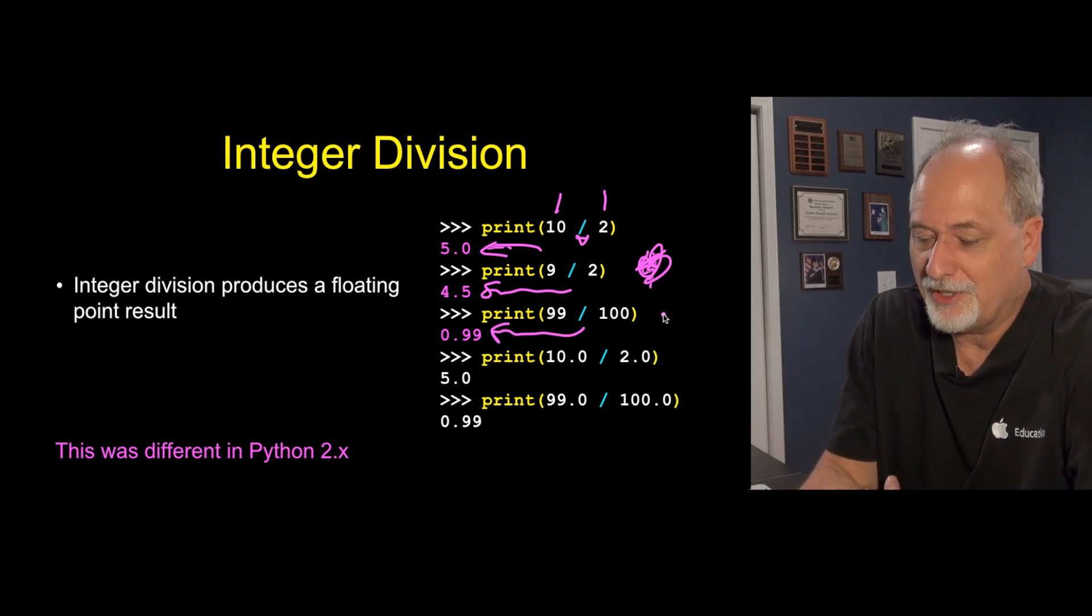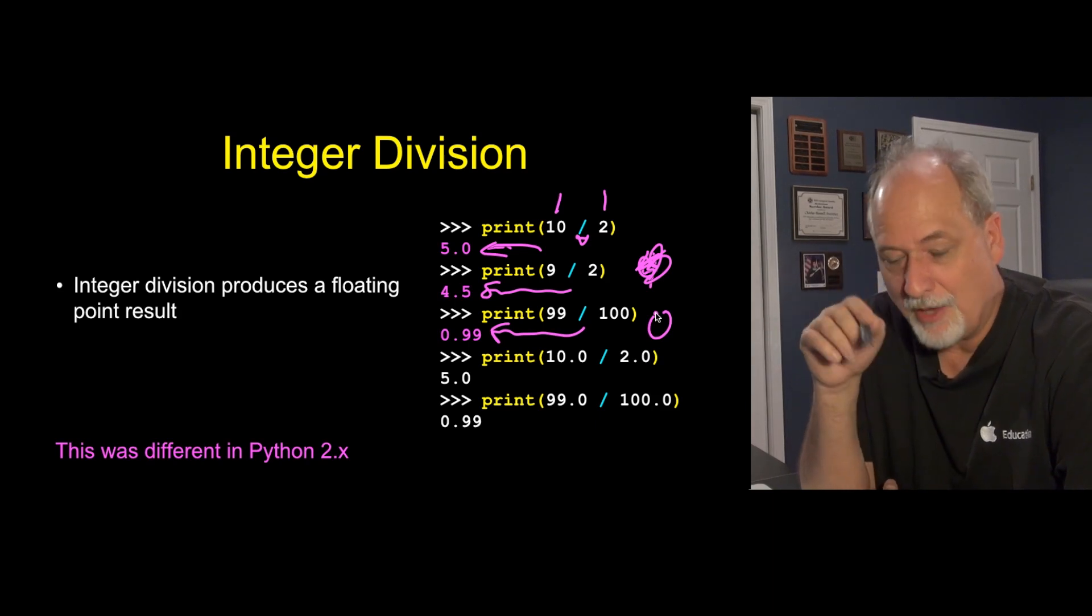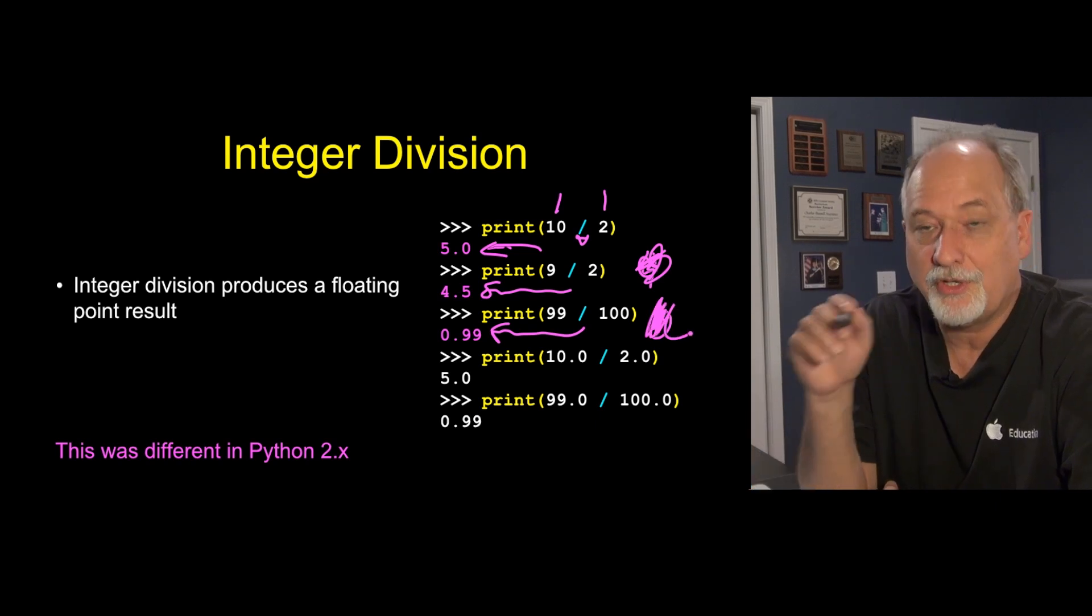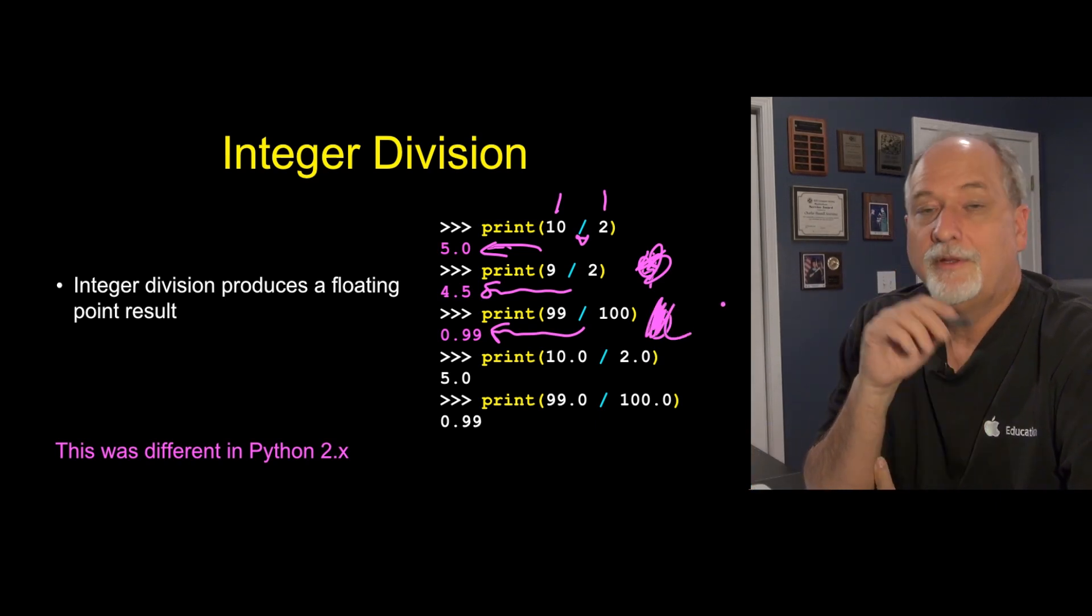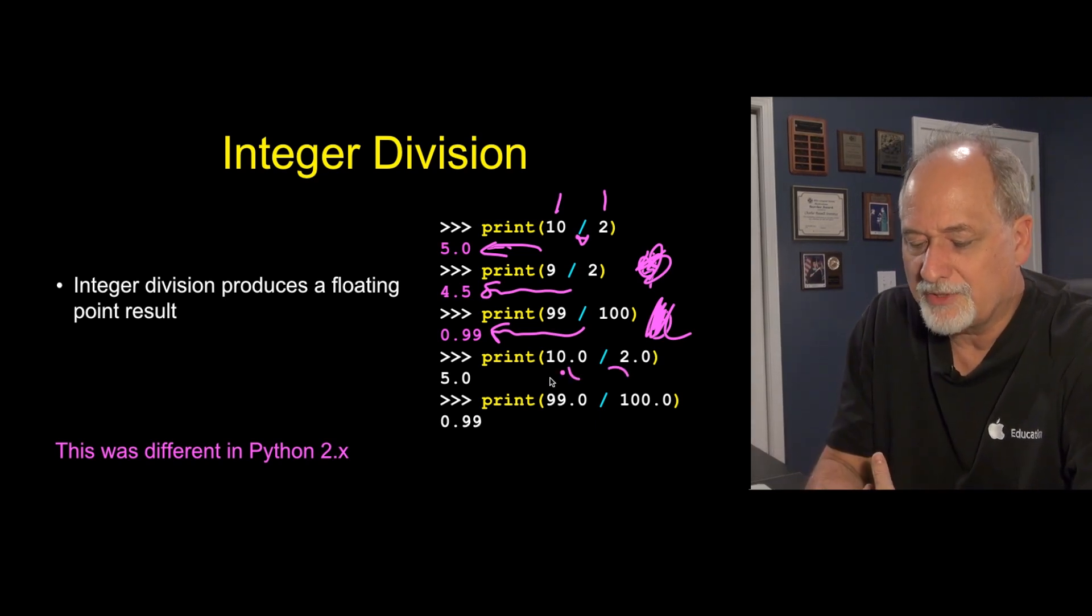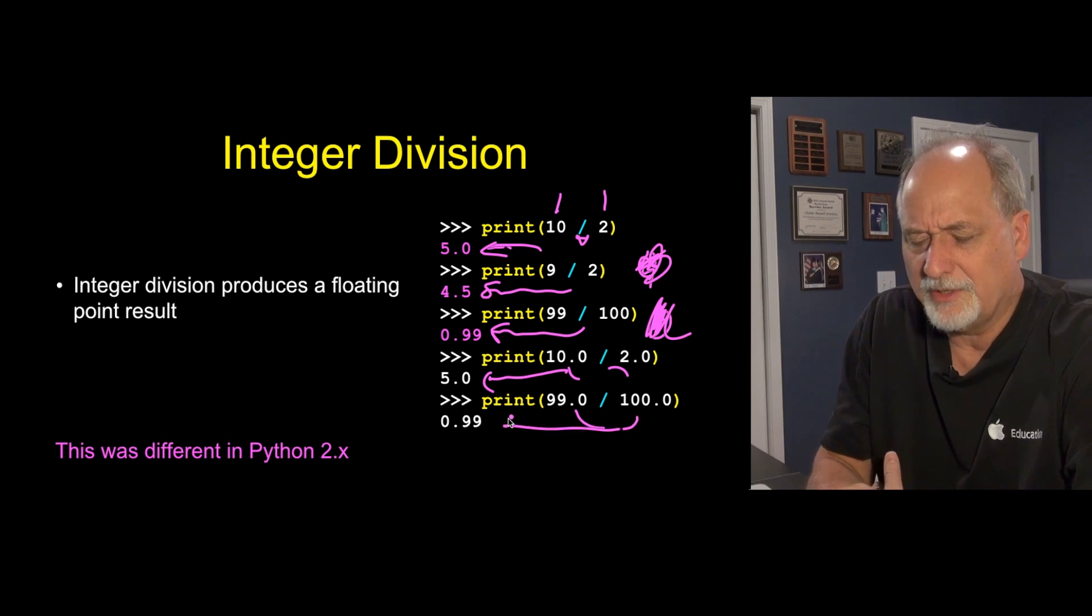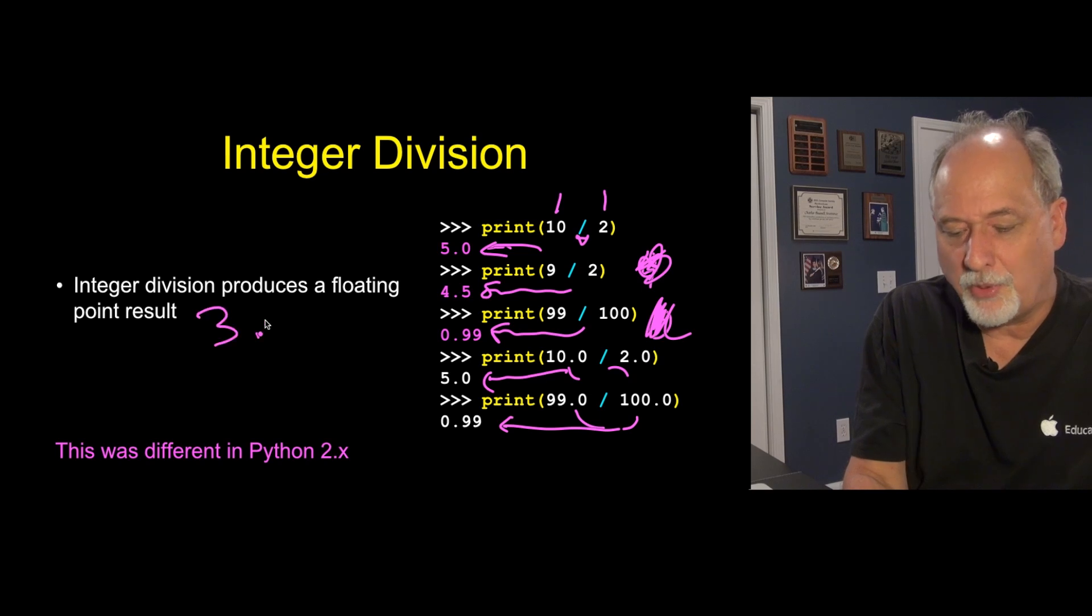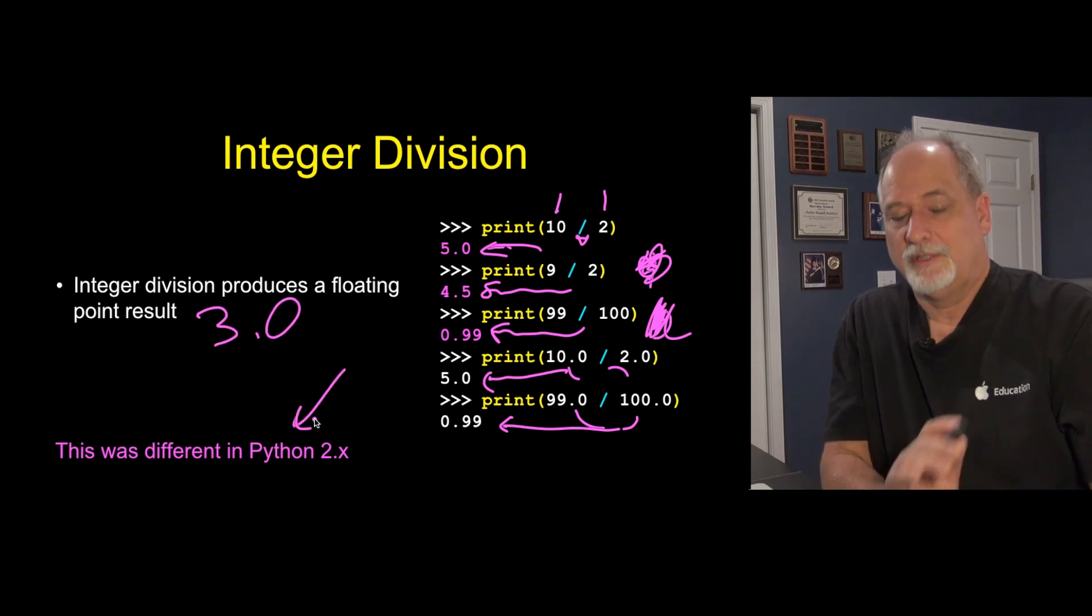In old Python 2, that would give us back 4, which is completely unpredictable and weird. The same with 99 over 100, as you would expect if this were a calculator, you get 0.99. What you get in Python 2 is 0 because it would truncate it. That's Python 2. We're not talking about Python 2. There's a good reason we're not talking about Python 2. Welcome to Python 3. If there are floating point on either side, the result is still a floating point. So integer division produces a floating result in Python 3.0, not in Python 2.0. That is an improvement.